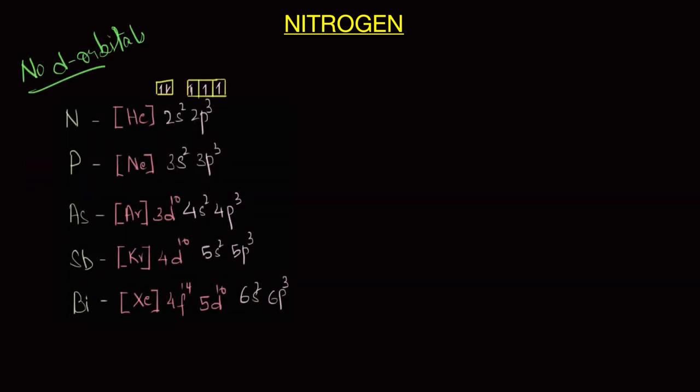Let's now talk about how the lack of any empty d orbitals affects the chemistry of nitrogen. Unlike the other members, nitrogen does not have any empty d orbitals because there is no d orbital in the second shell, whereas if you look at phosphorus you have the presence of empty 3d orbital, arsenic has the presence of empty 4d orbital, antimony has empty 5d orbitals, and so on.